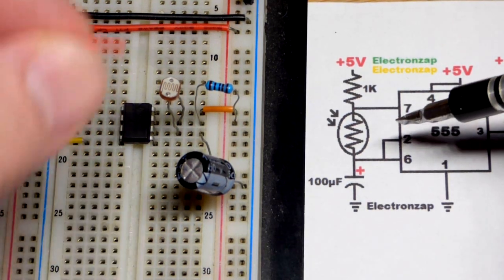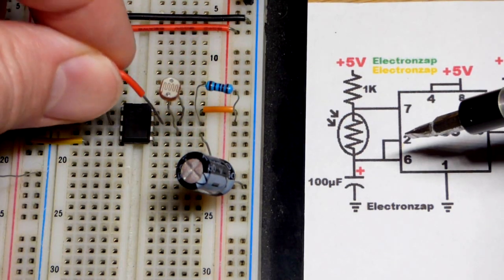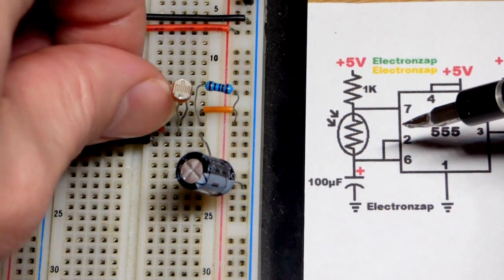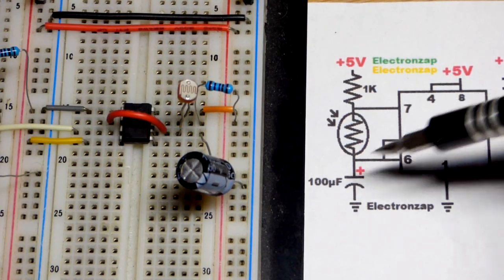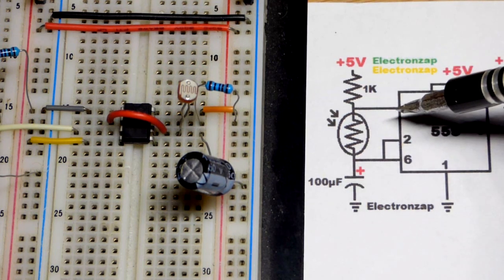Now it discharges until pin two. We have to add a jumper here from six to two until pin two notices that it dropped down to one-third of the supply voltage. And when it drops down to one-third of the supply voltage, it's discharging through that resistor.